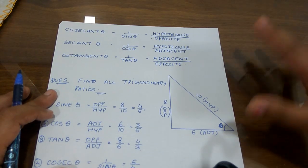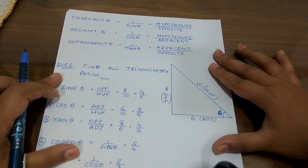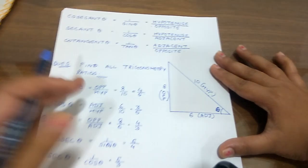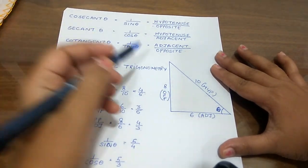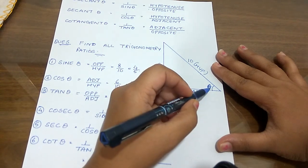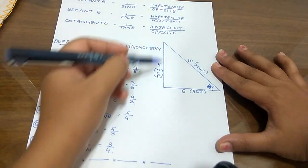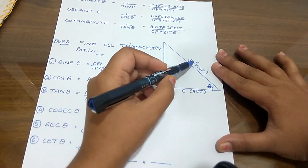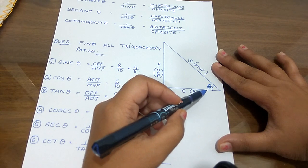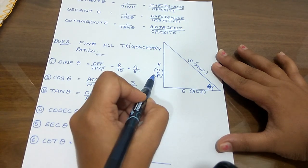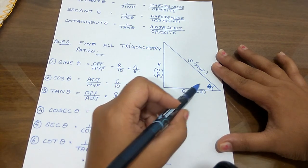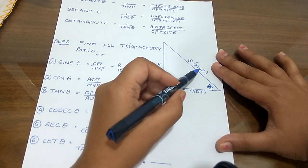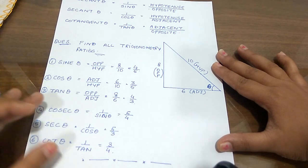Now to explain them more clearly, we have an example. Let's say this is a right angle triangle and we have the values. This is my theta. The height given is 8, the base is 6, and the hypotenuse is 10. So here is theta — the opposite side is 8, the adjacent side is 6, and the longest side, the hypotenuse, is 10. Now let's calculate the values.